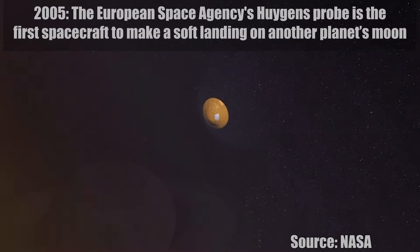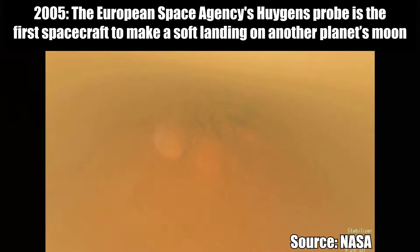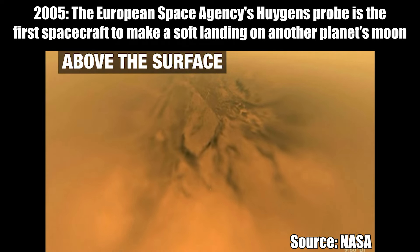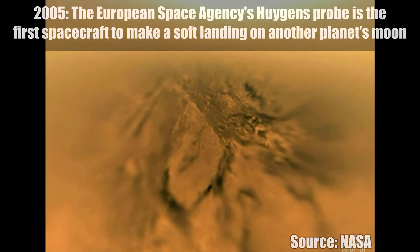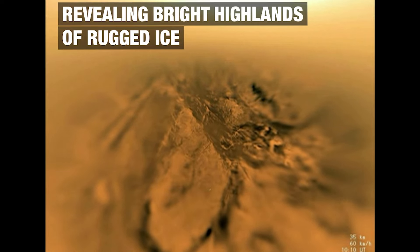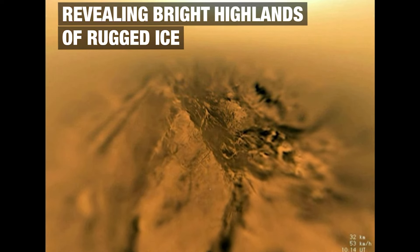In 2005, the European Space Agency's Huygens probe became the first spacecraft to make a soft landing on the surface of another planet's moon, Saturn's giant moon Titan. The probe provided the first direct study of Titan's atmosphere and the first and only direct images of Titan's surface, which is shrouded by its haze.